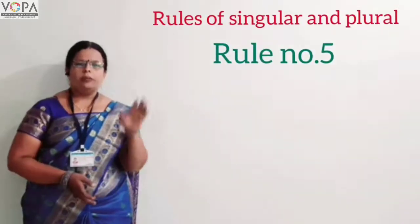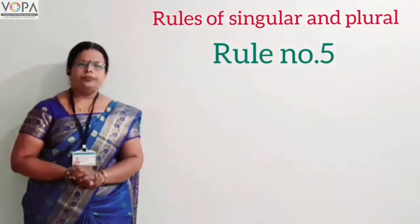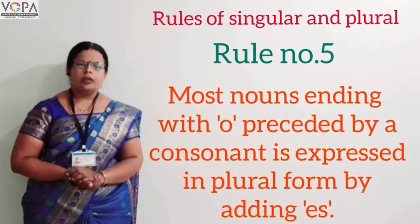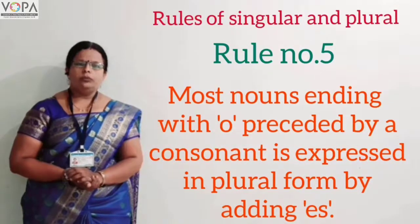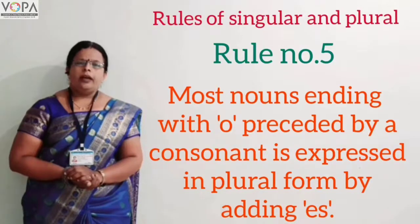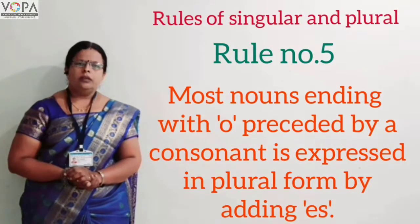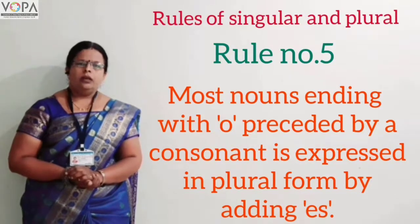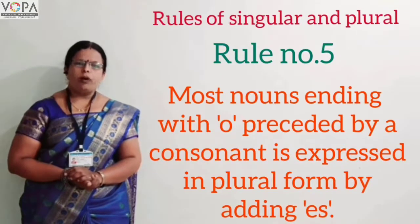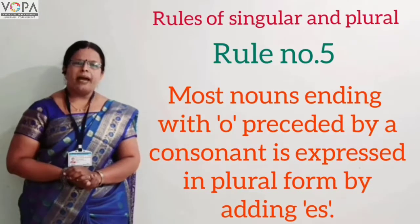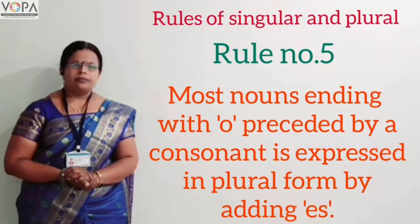Rule number five. Most nouns ending with 'o' preceded by a consonant form their plural by adding 'es'.